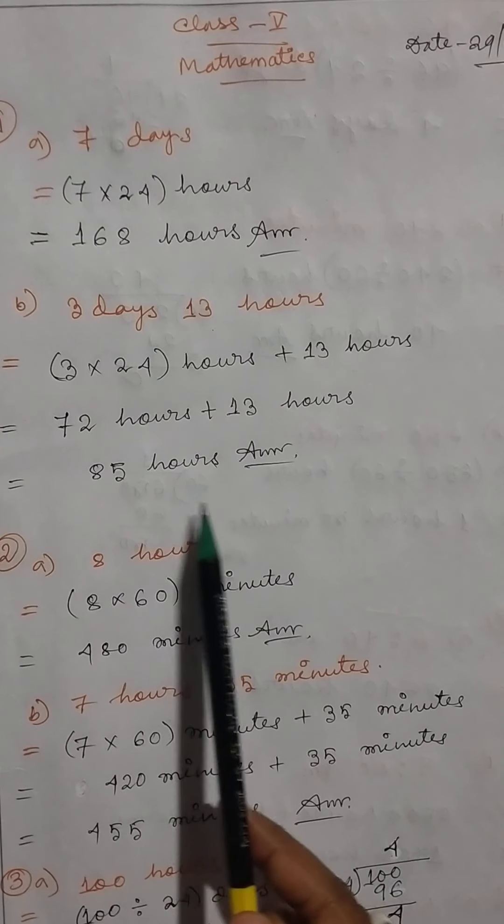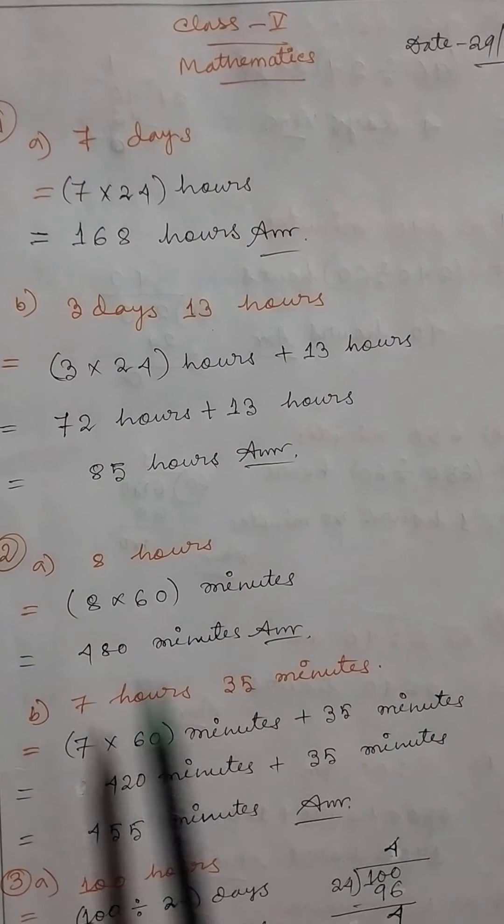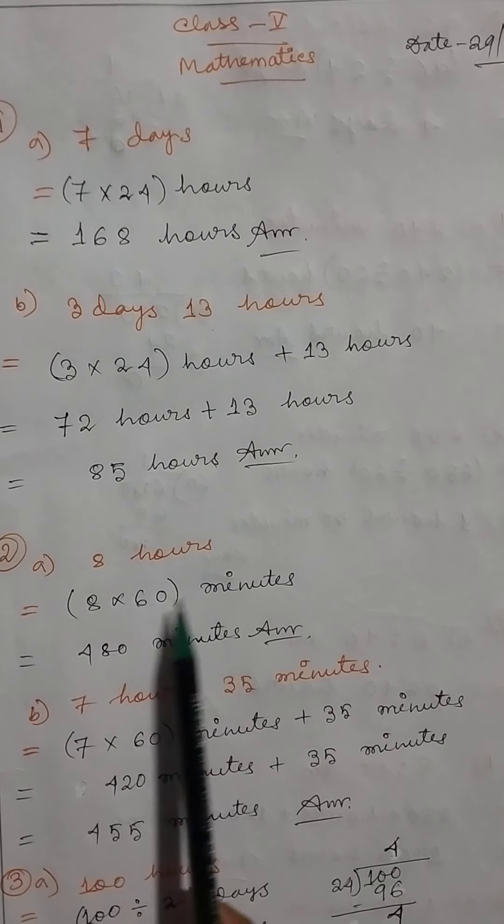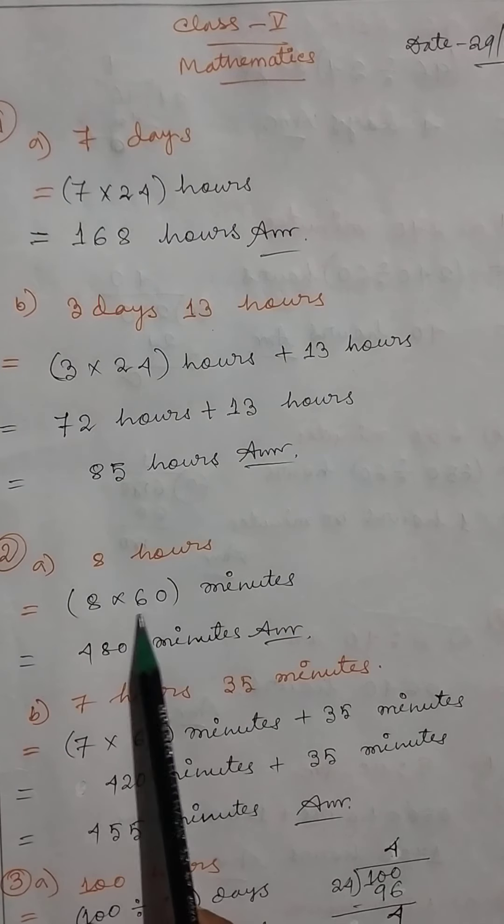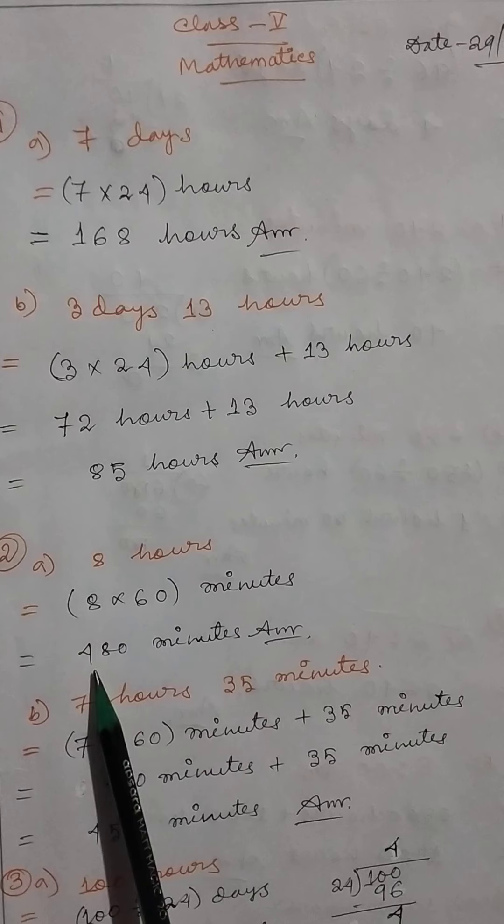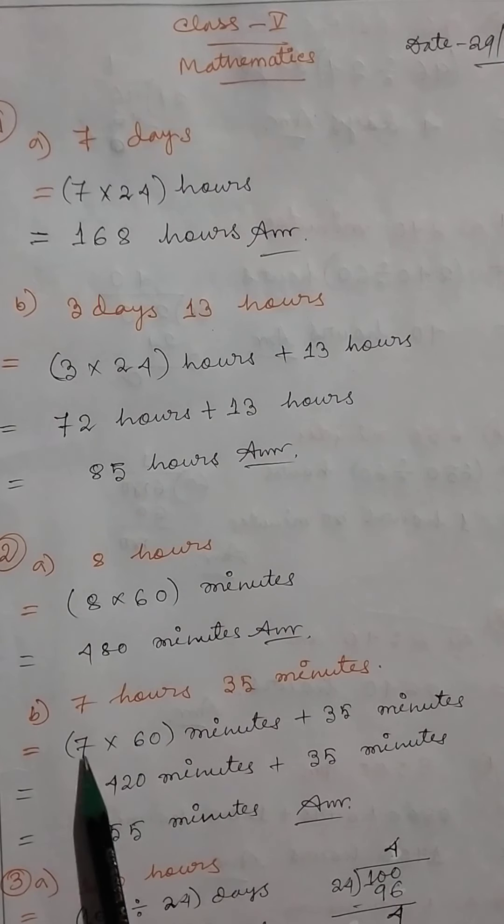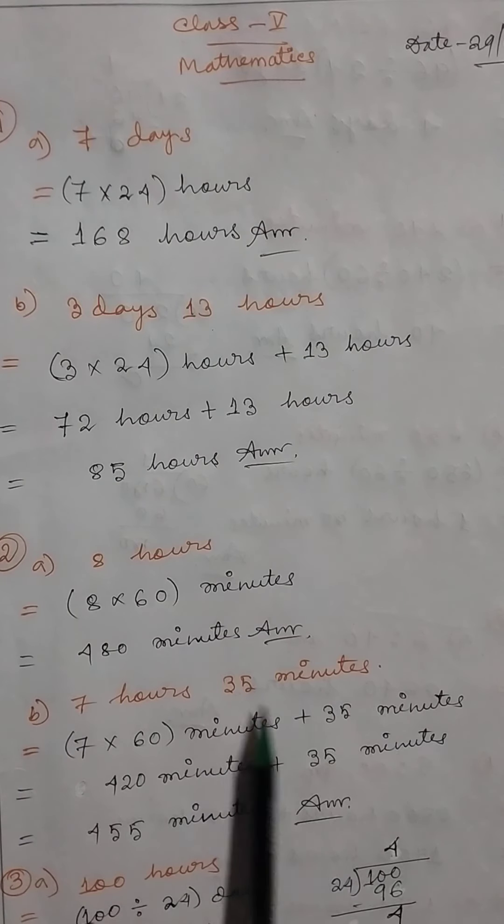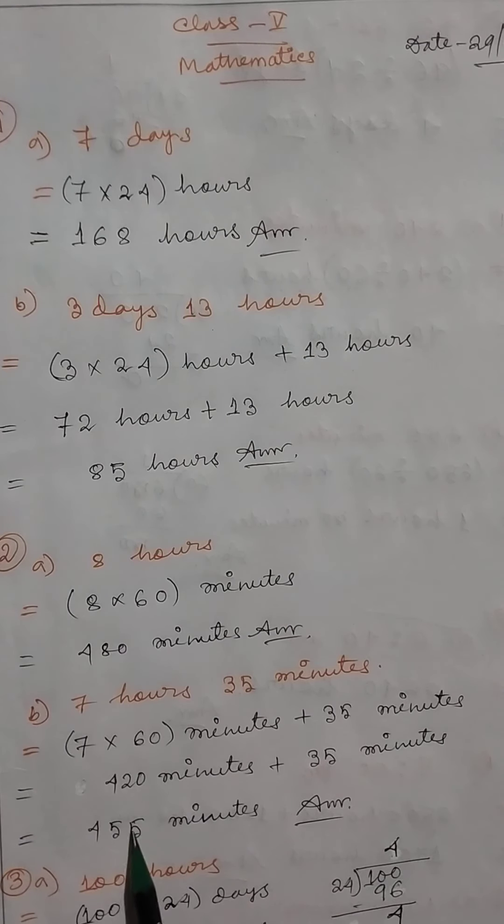Number 2: Convert the following into minutes. 8 hours: 8 × 60 minutes equals 480 minutes. Same way, 7 hours 35 minutes: convert hours to minutes then add. 420 plus 35 minutes equals 455 minutes.